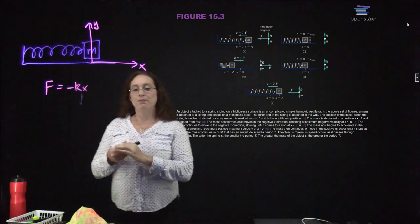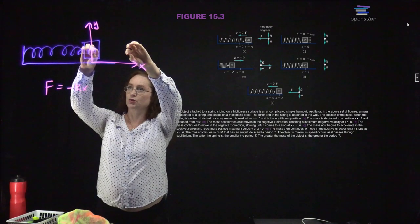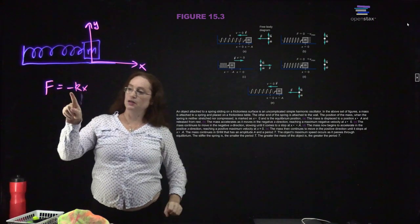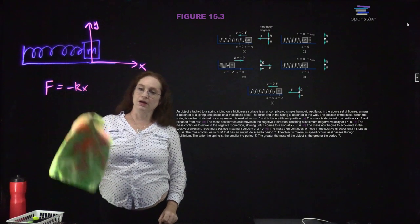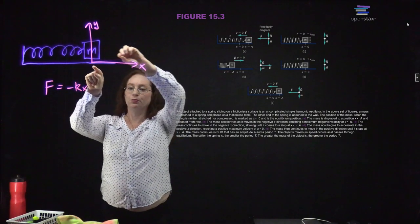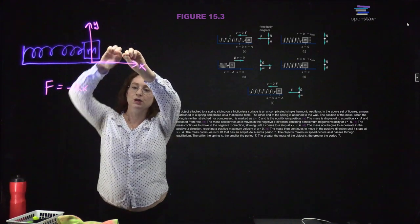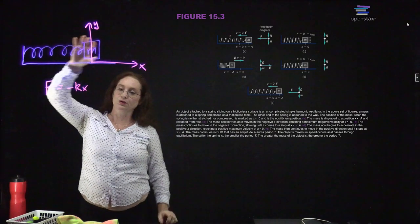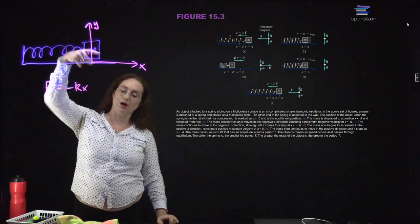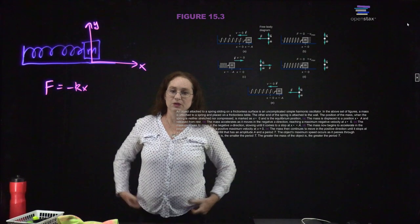If I pull my mass slightly from equilibrium, it is going to experience a force pushing it back. The negative sign indicates that this is your displacement from equilibrium, so if you pull the spring in the positive x direction, the force is in the negative x direction. If you pull the mass in the negative x direction, the force is in the positive x direction, so that the force always pulls the mass back towards its equilibrium position.